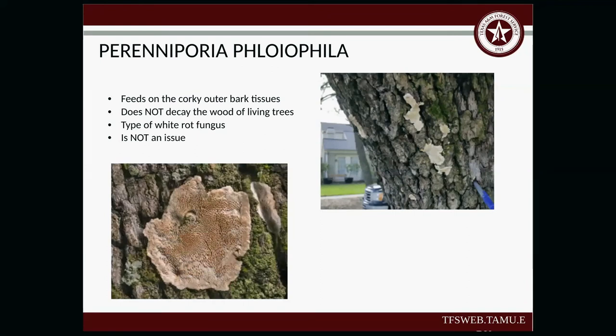There's another type of fungus that feeds on the outer bark tissue but does not decay the wood of the living tree — it's a type of white rot fungus. It's not an issue if you see it. Do not freak out and feel like you need to purchase any fungicide. It's fine — it's not going to harm your tree at all.